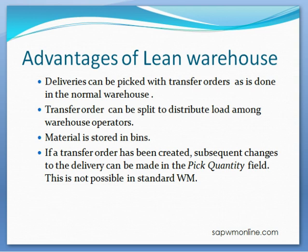The lean warehouse system offers some advantages over the normal IM solution. We can use transfer orders to pick deliveries, and transfer orders can be split to distribute the workload between warehouse operators. The material is stored in bins, and pick quantity can be changed in a delivery even after a transfer order is created for that line item.